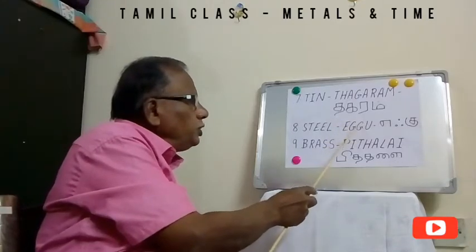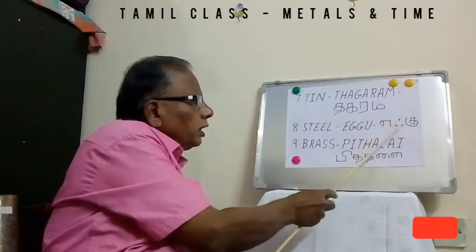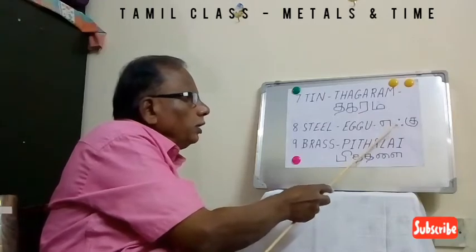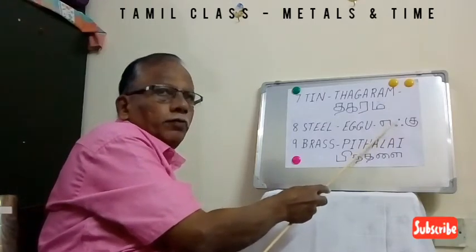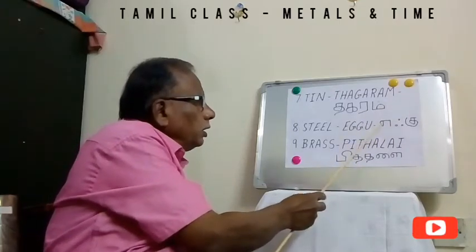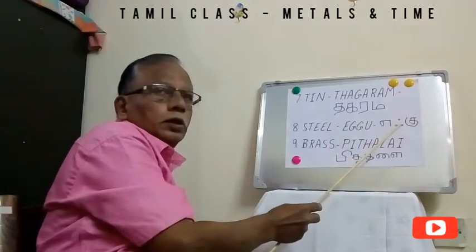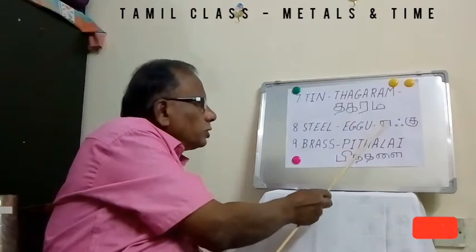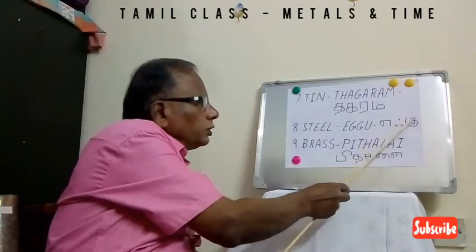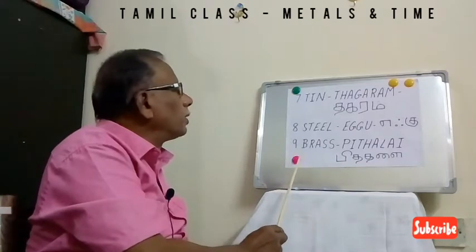The eighth one is Steel. We call it Egg — E-G-G-U written in English. This is a special letter found very rarely in Tamil literature. For Steel we say Egg. You write it just like a three in a triangle — three circles. This is called Egg.